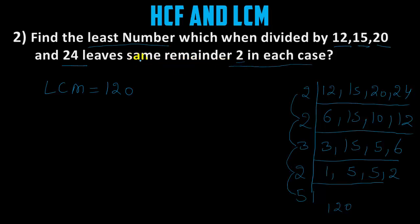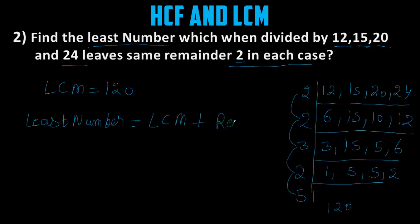There is a different formula now for least number when the same remainder is given: least number = LCM plus remainder. The LCM we found is 120 and the remainder is given as 2. So 120 plus 2 is 122. That is our answer.